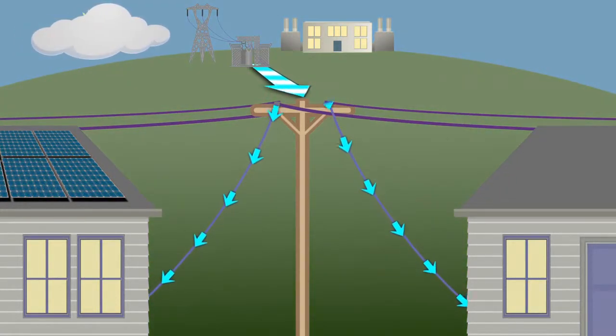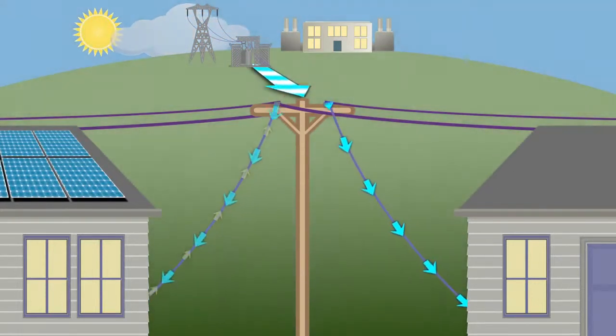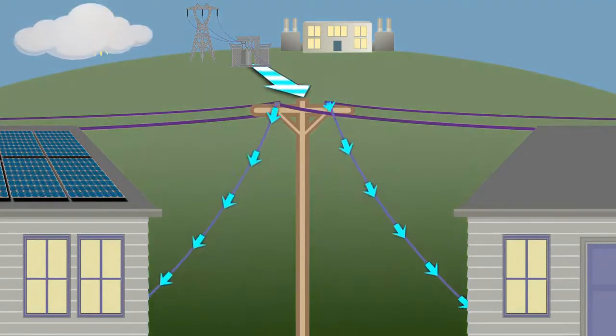But if a cloud passes by the sun, or if it's a gray day or nighttime, consumers with solar panels rely on power from their electric cooperatives' traditional generation sources to maintain their reliable power, just like their neighbors.